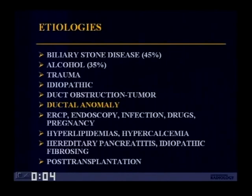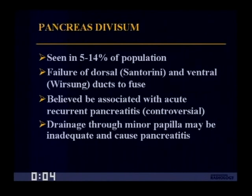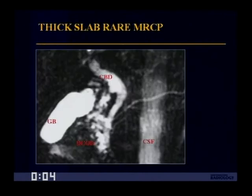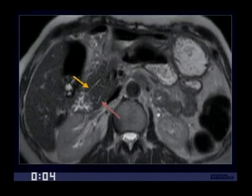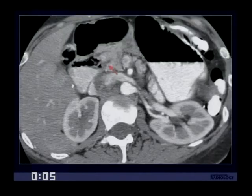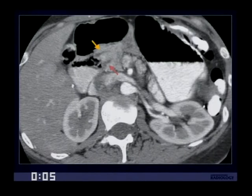Other etiologies for pancreatitis include ductal anomalies. For that we're often doing MR, but thin-section CT can also be used. The most common anomaly is pancreas divisum, reported in 5% to 14% of the population. It's due to failure of the dorsal and ventral ducts to fuse and is believed to be associated with acute recurrent pancreatitis, generally due to inadequate drainage through the minor papilla. Here's a thick slab MRCP showing pancreas divisum with two non-communicating parallel ducts, also visible on thin-section CT draining separately into the duodenum.